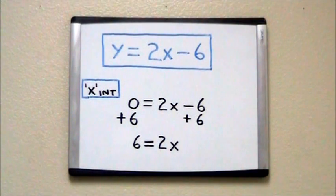Now all we do is divide 6 by 2 and 2 by 2 to get our final answer of x equals 3. In other words, our x-intercept is 3.